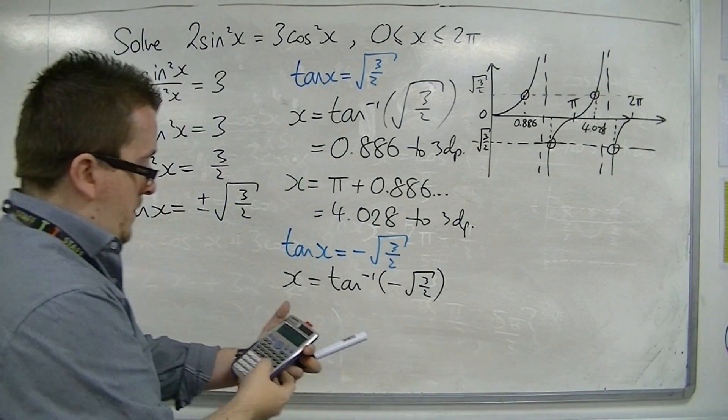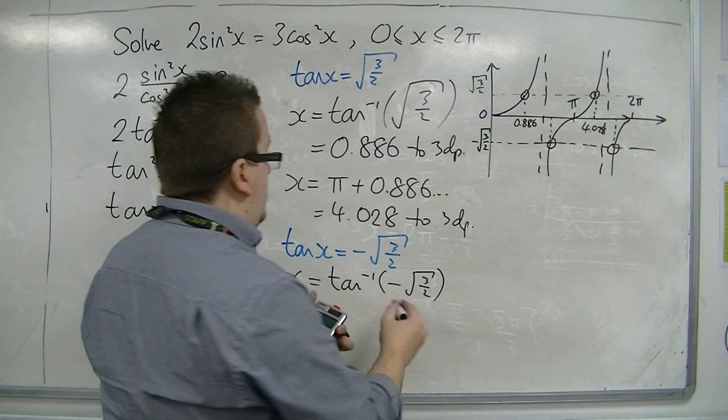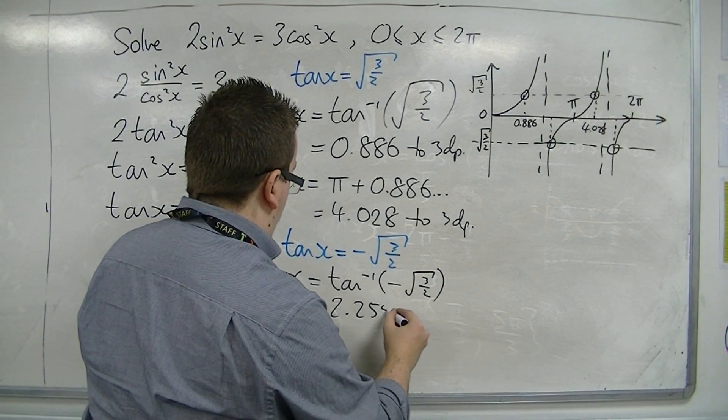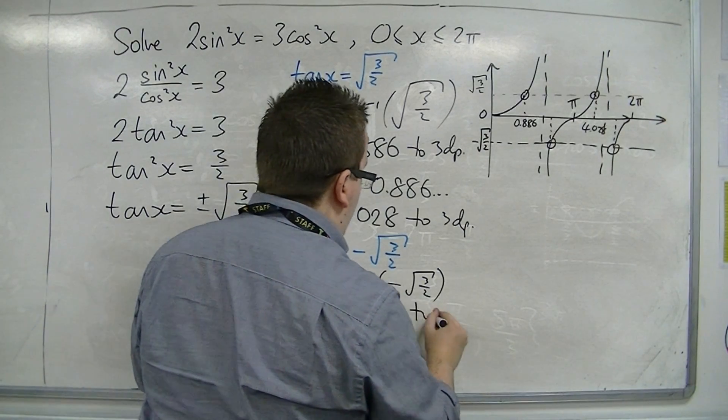Add pi and that gets me 2.256 to three decimal places.